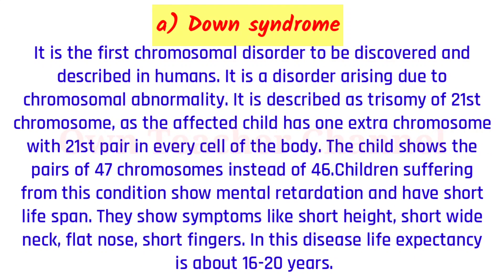Question 4: Down Syndrome. It is the first chromosomal disorder to be discovered and described in humans, arising due to chromosomal abnormality described as trisomy of the 21st chromosome. The affected child has one extra chromosome with the 21st pair in every cell, showing 47 chromosomes instead of 46. Children show mental retardation, short height, short wide neck, flat nose, and short fingers. Life expectancy is about 16 to 20 years.